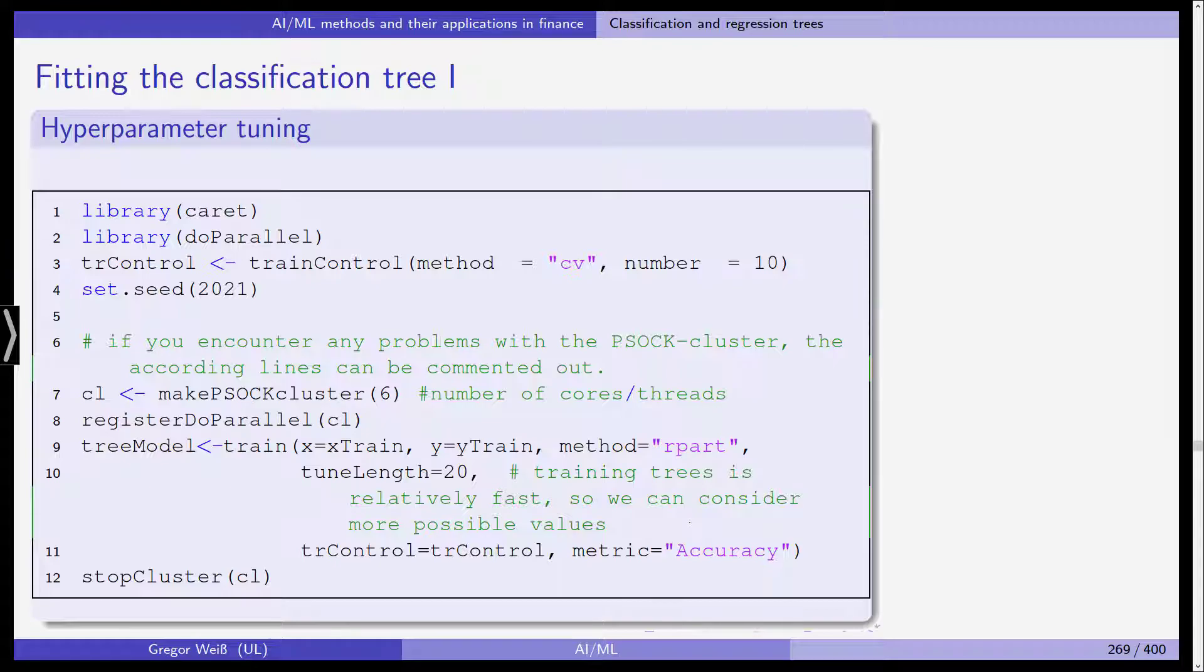Set seed in line four. If you encounter any problems with the parallelization, just comment these two lines out. Then tree model is we train based on x-train with the response being y-train. The method is rpart, which is for partitioning. The tune length is 20 and training trees is relatively fast so we can actually consider more possible values.